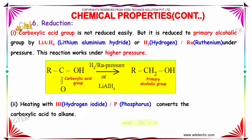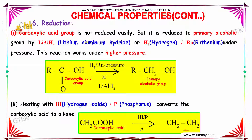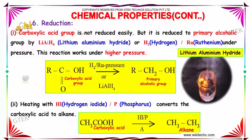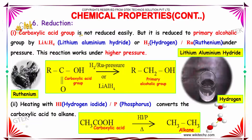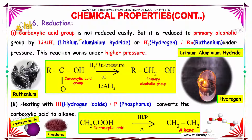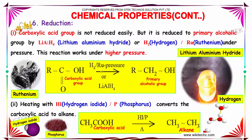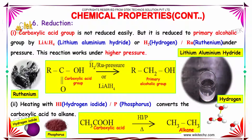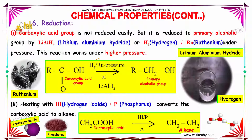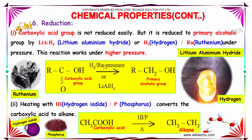Reduction reactions. The carboxylic acid group is not reduced easily, but it is reduced to a primary alcohol group by LiAlH4, or even by hydrogen with ruthenium under pressure. This reaction works under high pressure.